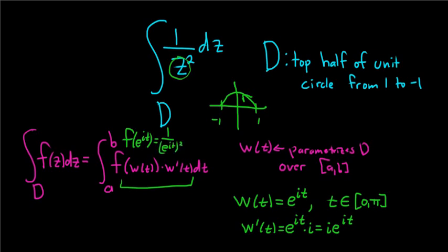All right, let's go ahead and work this out. So this is the contour integral over D of 1 over z squared dz, and that's equal to the definite integral from 0 to pi. Right, a is 0 and b is pi, and we know that this piece here, we worked out up here. That's 1 over e to the i t, quantity squared,